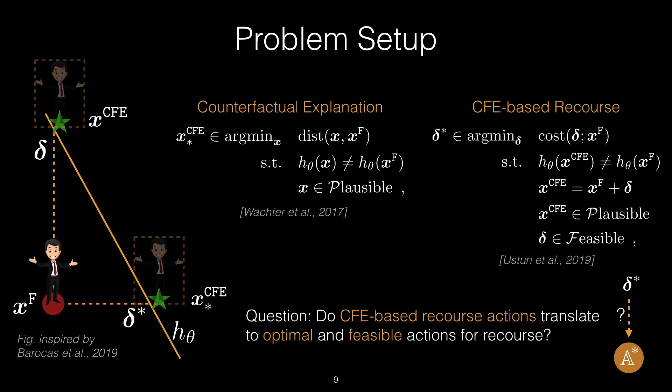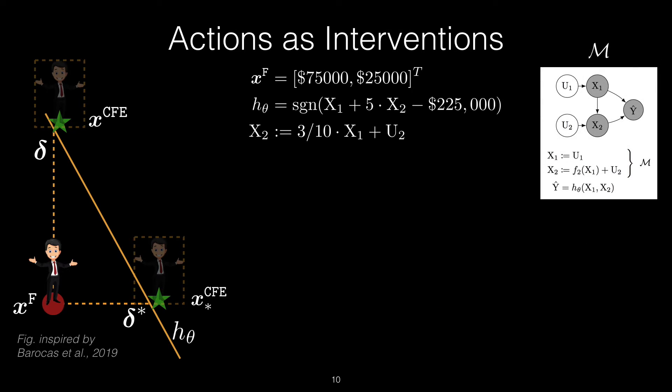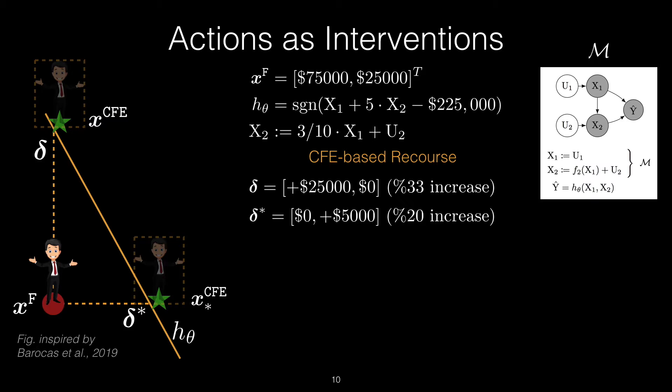Let's look at an example. Consider the following setting: imagine Edward is a home seeker with a salary of $75,000 and a savings balance of $25,000. Consider a fixed predictor used by the bank, and imagine further the causal relations between these variables, where home seekers typically save 30% of their salary. The full SCM capturing this setup is shown on the right. In this setting, previous methods based on counterfactual explanations would return either of these two deltas, represented by the two green stars in the figure.